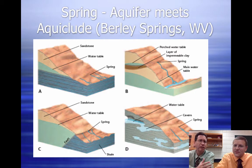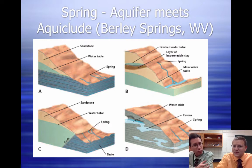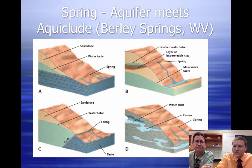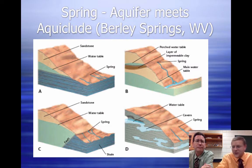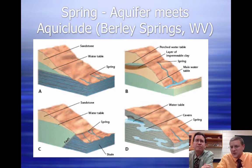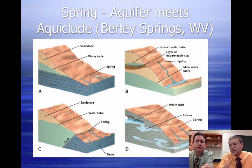If you have a layer of clay and the water sitting on top of that happens to be on a slope, then the water will move down along that clay until it reaches the exterior. Or if it hits an area of bedrock like shale — shale is an impermeable layer versus sandstone, which is a permeable layer — the water can pass through the sandstone through the porous spaces until it hits the impermeable shale, and then it will spring out.